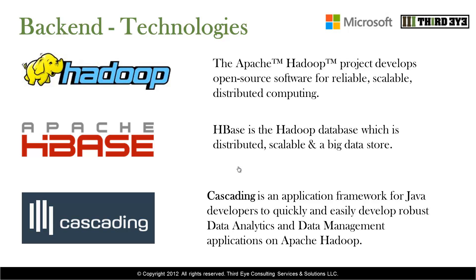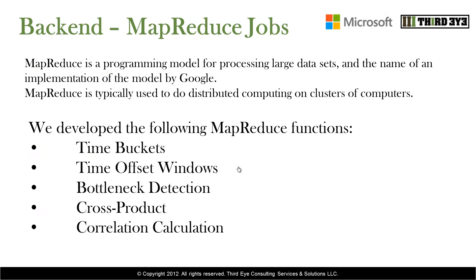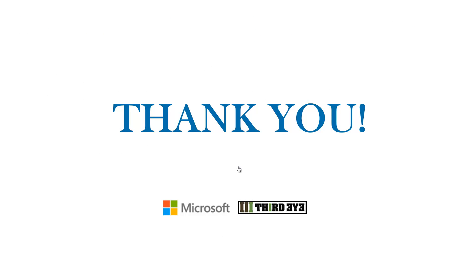The data processing portion of the project consisted of the following components: Hadoop, HDFS, MapReduce, Cascading, and Edge Base. Hadoop HDFS houses all the raw traffic data. We developed the following MapReduce jobs: time buckets, time offset windows, bottleneck detection, cross product, and correlation calculation. The front-end is supported on HTML and jQuery with several other APIs. Thank you for watching the demo on Traffic Data Analytics.